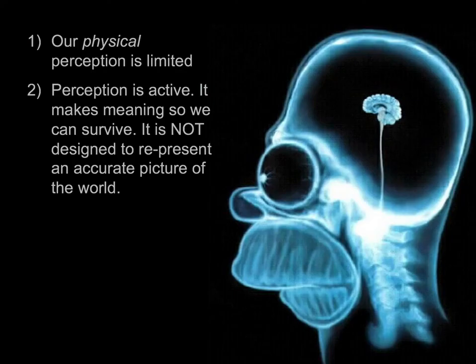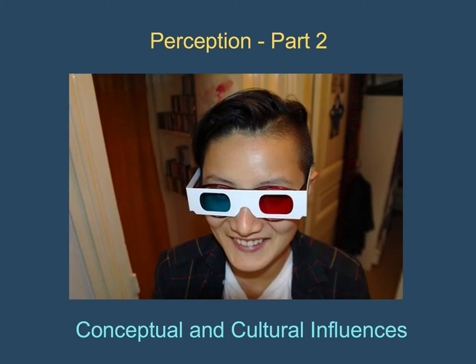By just looking at the physical hardware of our perceptual system, we can derive two conclusions. First, physical perception is limited — we don't get the whole picture, only a small part of it, and I've only focused on color here. Most importantly, perception is active — it makes meaning so we can survive in the world. It's about what's in the world; it's not designed to create an accurate picture of the world. That concludes part one of this presentation. In part two, we're going to look at the conceptual and cultural influences on our perception and how that works.